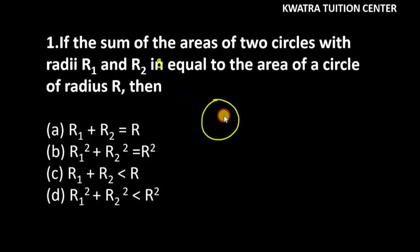Here the information is very simple. The first circle is r1, the second circle is r2. The area of two circles is equal to a big circle, and the radius is r.